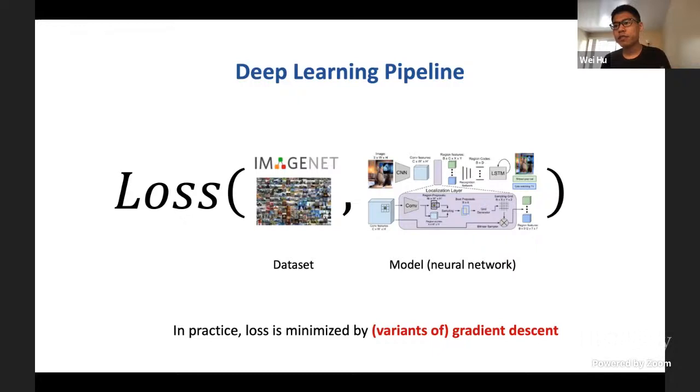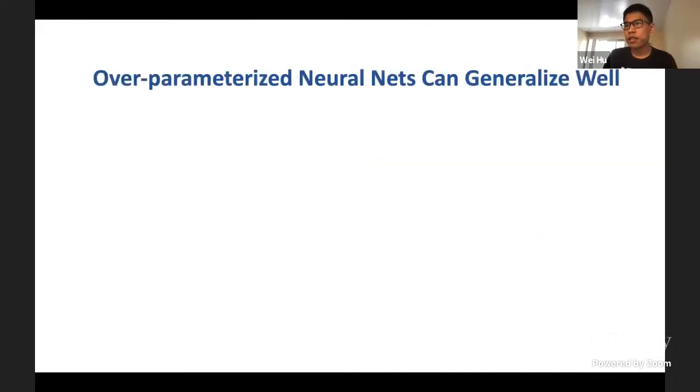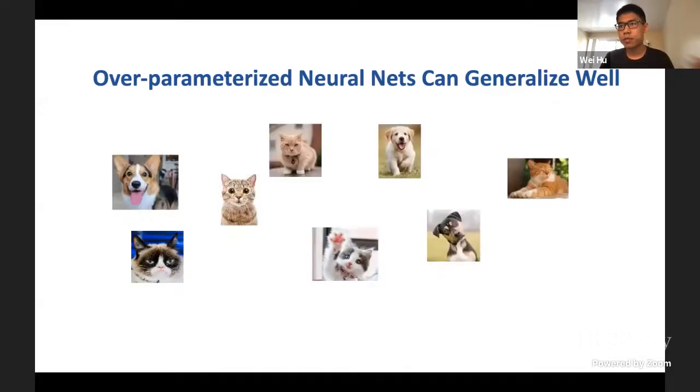This pipeline has achieved tremendous success in practice, which is very mysterious from a theoretical perspective. One of the biggest mysteries in the theory of deep learning is the so-called generalization mystery. That is, over-parameterized neural networks can generalize well, meaning that they not only can fit the training samples, but also perform well on unseen test samples.